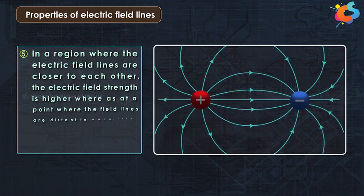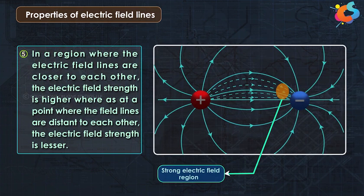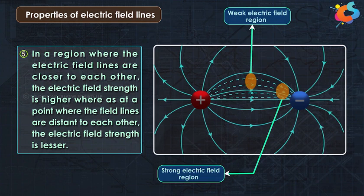The fifth and last property relates to the magnitude or strength of the electric field. In a region where the electric field lines are closer to each other, the electric field strength is higher. Whereas at a point where the field lines are farther apart, the electric field strength will be lesser. These are the properties of electric field lines that help us in drawing and interpreting them. I hope everything in this lecture was clear, and we can now move to the next topic.